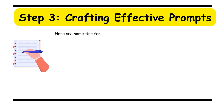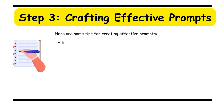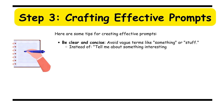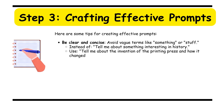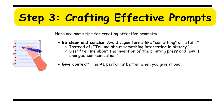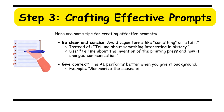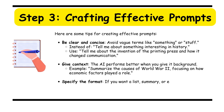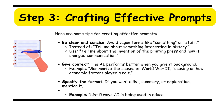Step 3: crafting effective prompts. Here are some tips for creating effective prompts. Be clear and concise — avoid vague terms. Instead of 'Tell me about something interesting in history,' use 'Tell me about the invention of the printing press and how it changed communication.' Give context — the AI performs better when you give it background. Example: 'Summarize the causes of World War II, focusing on how economic factors played a role.' Specify the format — if you want a list, summary, or explanation, mention it. Example: 'List five ways AI is being used in education today.'